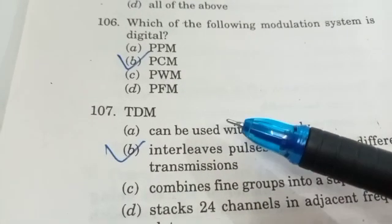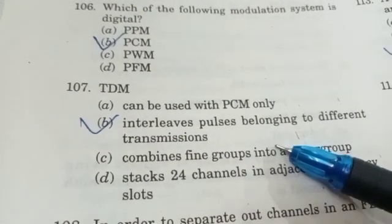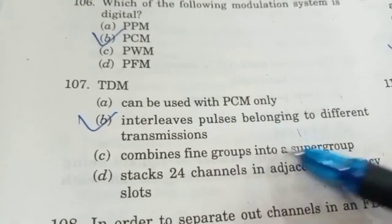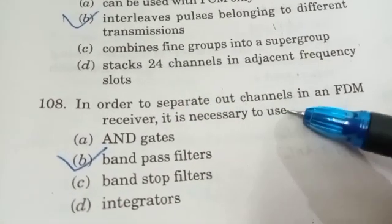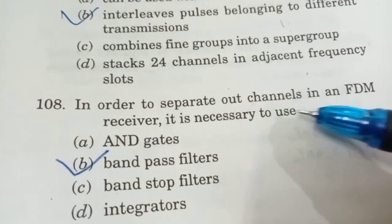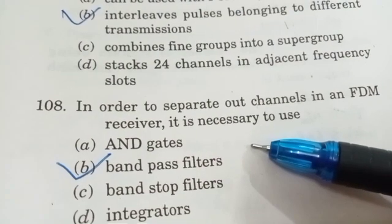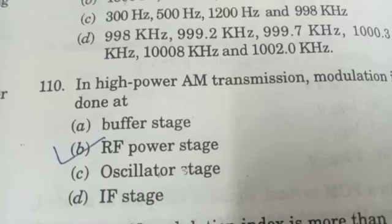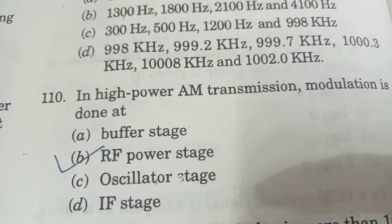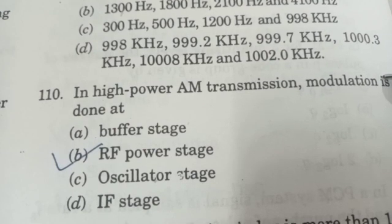In TDM (time division multiplexing), the correct option is B — it interleaves pulses belonging to different transmissions. In order to separate out channels in an FDM receiver, it is necessary to use band-pass filters. In high power AM transmission, modulation is done at the RF power stage — correct option B.